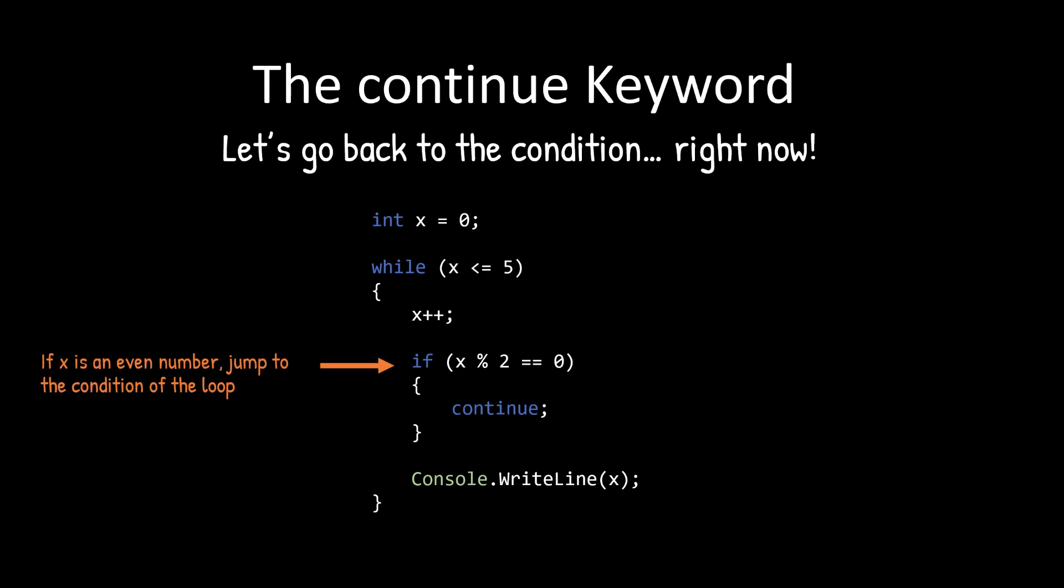So when we start this loop, it starts zero and then it adds one. So x becomes one. And since one is not even, it's going to hit the console dot write line and it will jump back up to the top. Is one less than or equal to five? Yes, it is.